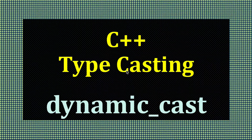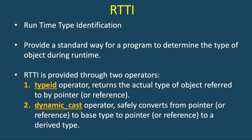In this video we will study about another type of typecast in C++ which is called dynamic_cast. In order to understand dynamic_cast, first we need to know about RTTI. RTTI stands for runtime type identification and it provides a standard way for a program to determine the type of an object during runtime. RTTI is provided using two operators: one is the typeid operator and the second is dynamic_cast.